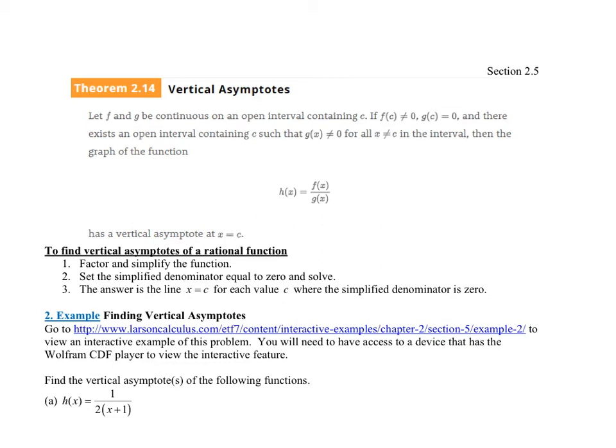So here's Theorem 2.14, which is on vertical asymptotes. It says, let f and g be continuous on an open interval containing c. If f of c is not equal to 0, g of c is equal to 0, then there exists an open interval containing c such that g of x is not equal to 0 for all x not equal to c in the interval, then the graph of the function h of x equals f of x over g of x has a vertical asymptote at x equals c.